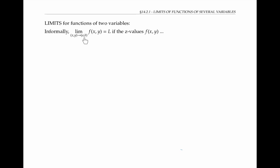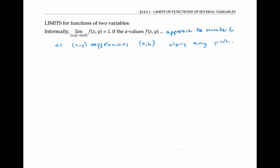For a function of two variables, informally, we say that the limit as the point (x, y) approaches (a, b) of f of x, y is the number L, if the z values — denoted by f of x, y — approach the number L as (x, y) approaches (a, b) along any path whatsoever. In the x, y plane, there are lots of ways to approach the point (a, b): from one direction, another direction, or even spiraling around. No matter what we do, the z values should approach the same number L. This is an informal definition; you'll see a more formal epsilon-delta definition in the book and in class.